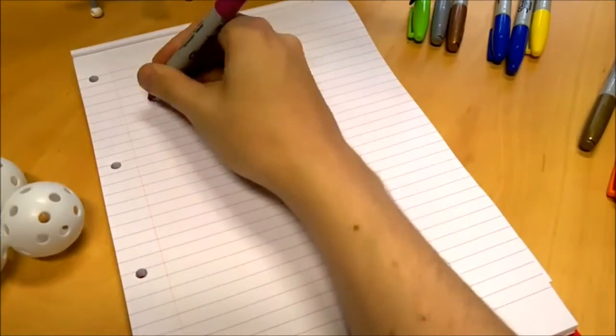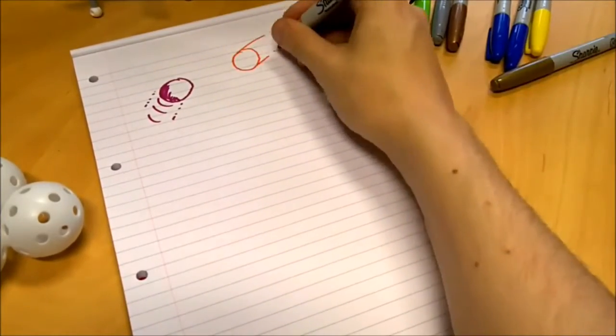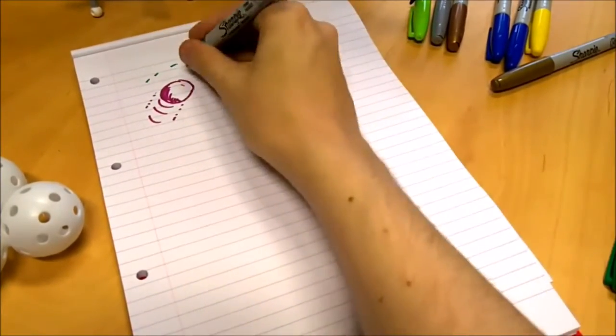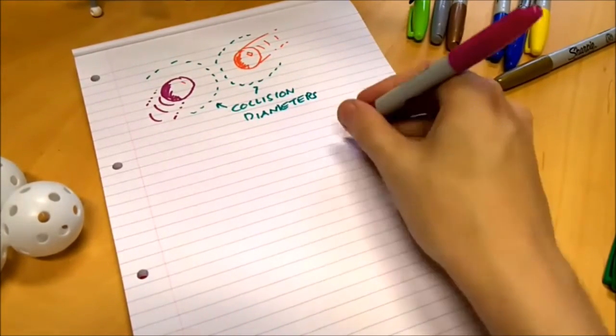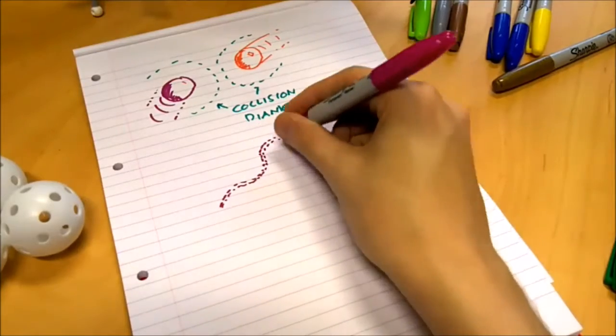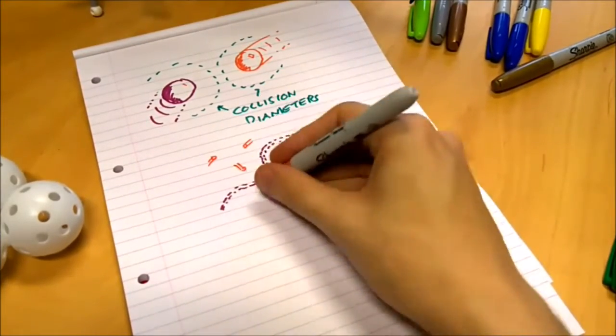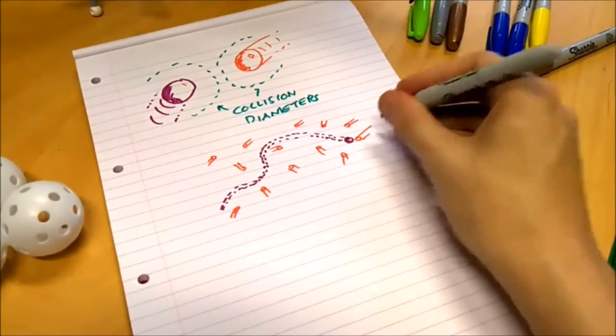We'll also take a look at the microscopic properties of reactions and look at collision theory. This measures and looks at kinetics from the perspective of the molecules. So you'll be able to work out properties such as collision diameter and collision cross-section, which are measures of a molecule's effective size that you can get from kinetic data.